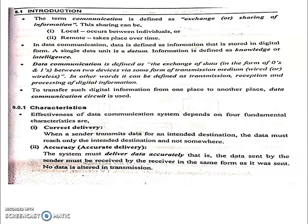Characteristics of data communication depend on four fundamental aspects. First, Correct Delivery — when a sender transmits data to an intended destination, the data must reach only that intended destination and not somewhere else. Second, Accuracy — the system must deliver data accurately, i.e., the data sent by the sender must be received by the receiver in the same form.